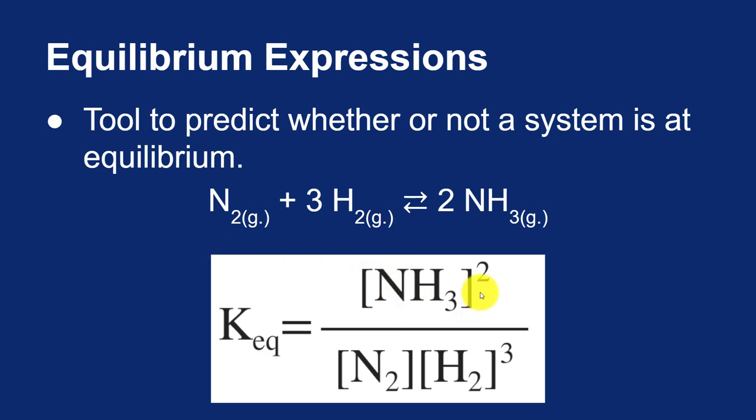The concentration of ammonia is squared because there's a coefficient of 2 in the balanced equation. The concentration of nitrogen doesn't have an exponent, or the exponent is 1 more correctly, because the coefficient of nitrogen is 1. And the concentration of hydrogen is cubed because the coefficient for hydrogen is 3.